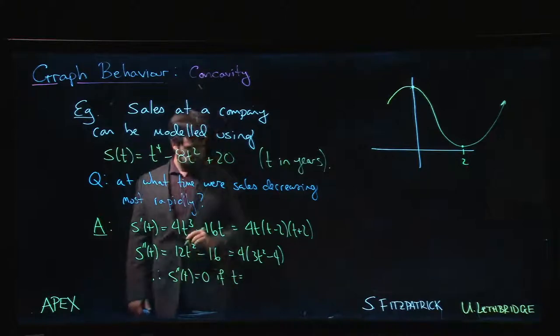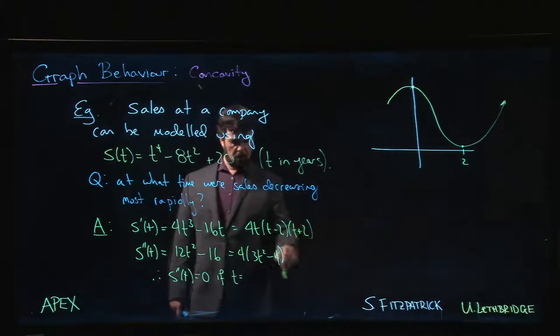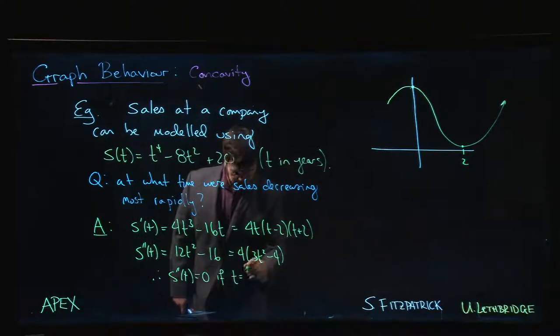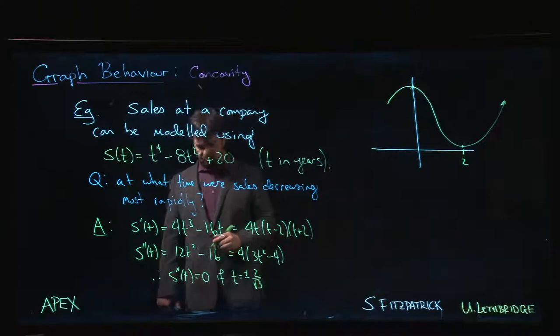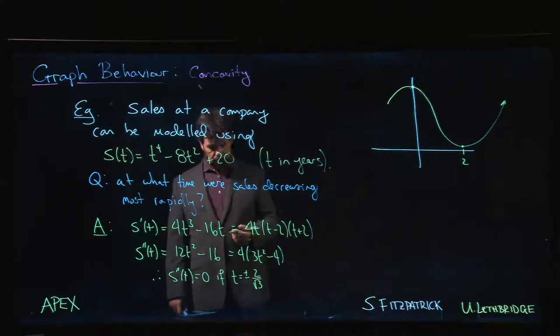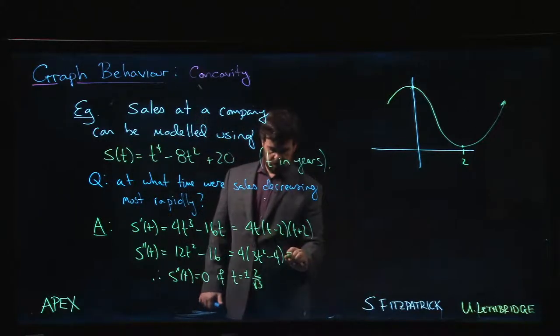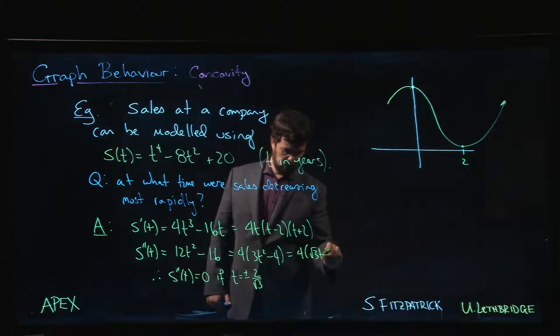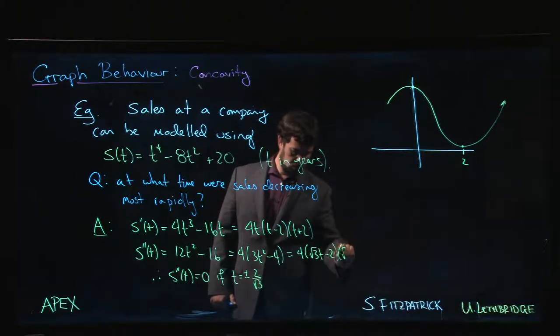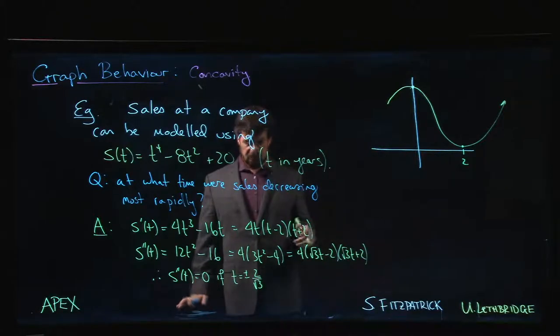So that means S''(t) = 0 if t is equal to - move the 4 over, divide by 3, take square roots - plus or minus 2 over the square root of 3. If we wanted to, we could factor this as (√3t - 2)(√3t + 2). It's often a good idea to factor completely if you can.